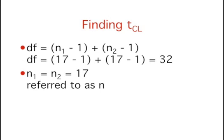The next step is to find the T to use for the confidence interval. This T depends on our level of confidence, and we refer to it as T sub CL. To calculate T sub CL, we need to know the degrees of freedom.